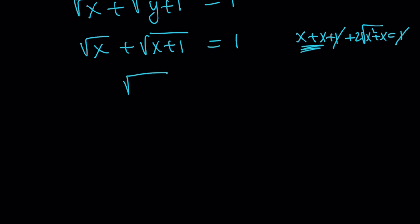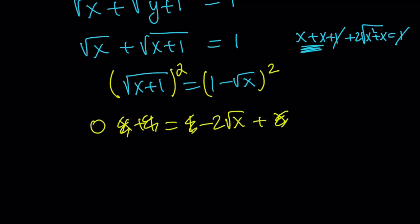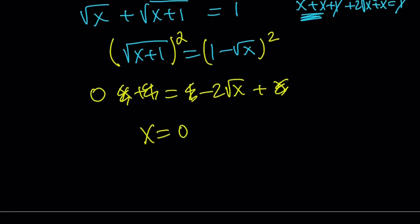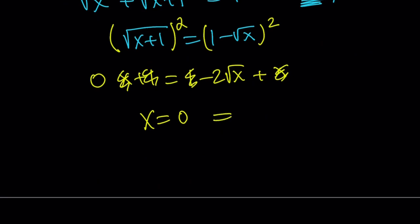Those terms cancel, and isolating the radical then squaring both sides again gives: x plus 1 equals 1 minus 2 times the square root of x plus x. The x cancels and the 1 cancels, leaving 0, which means x equals 0. Since y equals x, y is also equal to 0. By substitution, we get the answer: x equals 0, y equals 0.